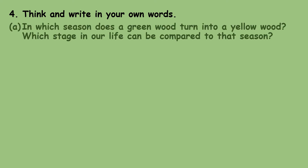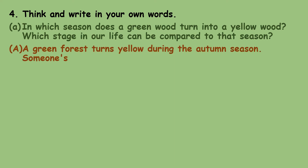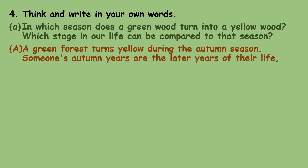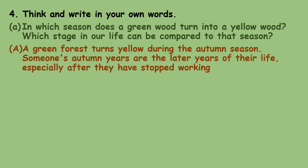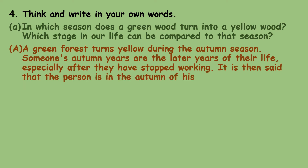In which season does a green wood turn into a yellow wood, and which stage in our life can be compared to that season? A green forest turns yellow during the autumn season. Someone's autumn years are the later years of their life, especially after they have stopped working. It is then said that the person is in the autumn of his or her life.